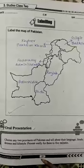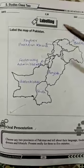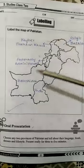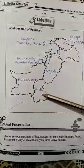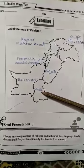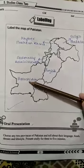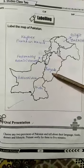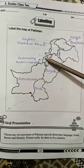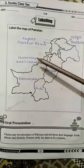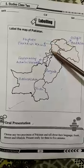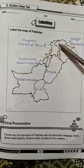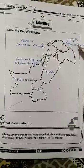Okay, now open page number 20. Labeling: label the map of Pakistan. This is the map of Pakistan. Right here — Sindh. Right here — Balochistan. In this box, right here — Punjab. This area is Federally Administered. This area is Khyber Pakhtunkhwa. And this area is Gilgit-Baltistan.